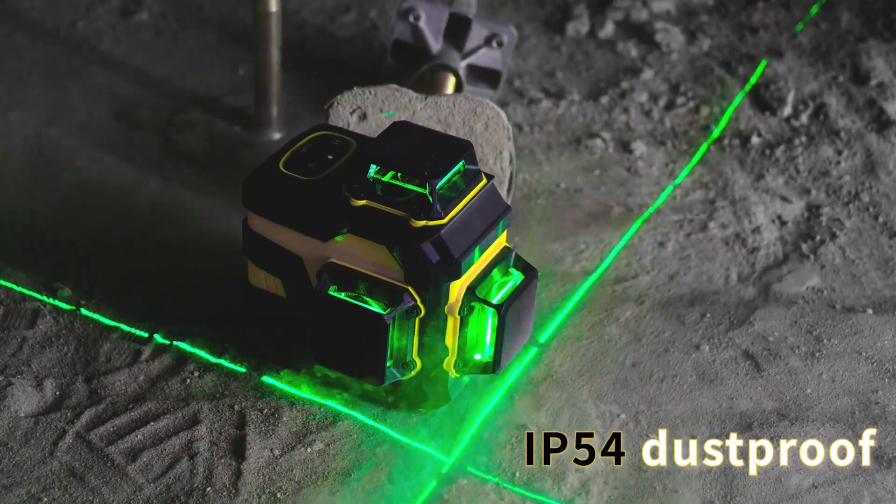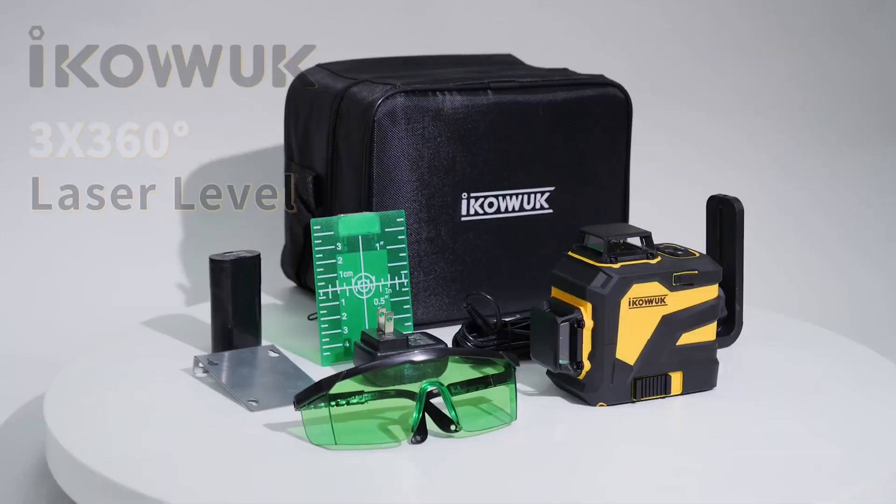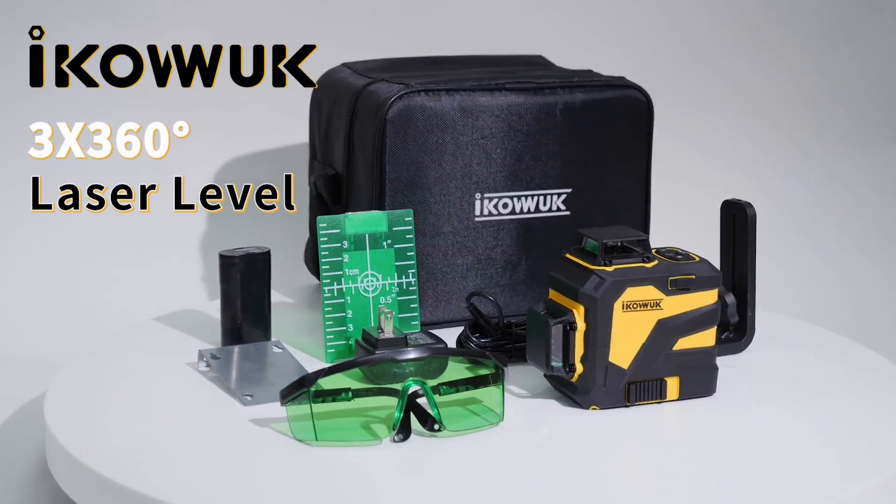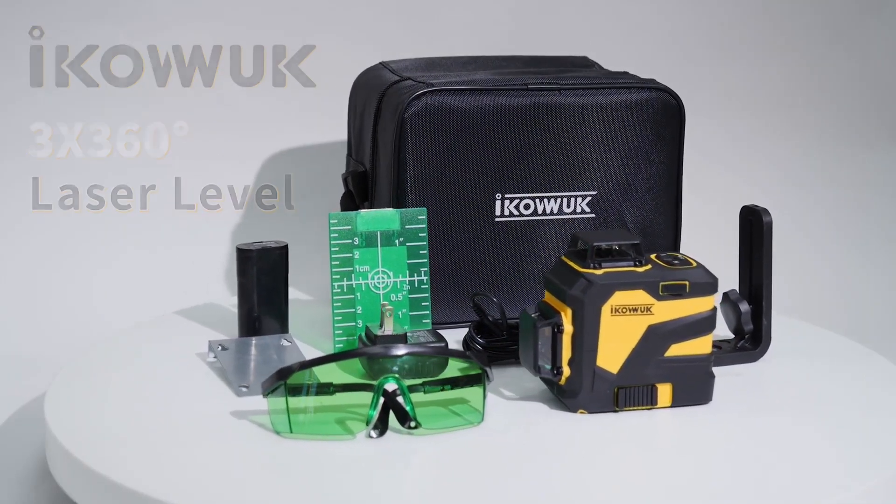The laser level has two kinds of green lasers - weaker and stronger. Switching to the weaker laser, pulse mode is turned on, and the indicator light will flash continuously.